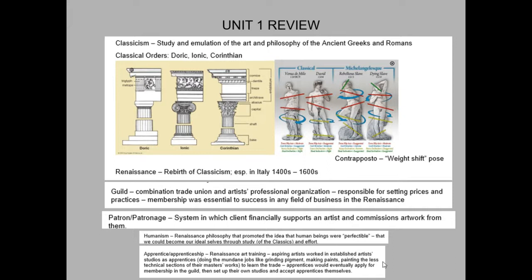Contrapposto is important — it comes from the ancient world and evolved in Greek and Roman statuary. Unlike Mesopotamian and Egyptian sculpture where standing figures carry equal weight on both legs and appear stiff, the Greek and Roman style involves a more natural position. Figures stand with most weight on one leg, contracting those muscles, with the opposite leg more relaxed — causing the engaged hip to raise and the shoulders to tilt in the opposite direction to maintain balance.